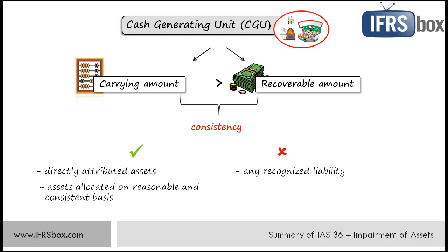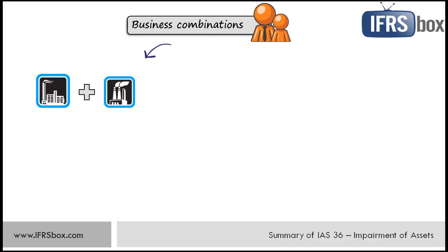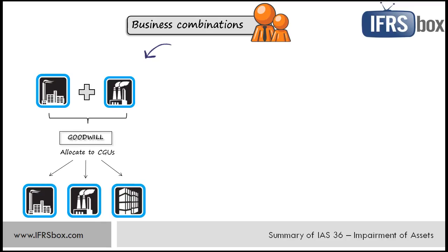Let me also explain impairment in relation to goodwill in business combinations. When one entity acquires another, goodwill often arises. For the purpose of impairment testing, goodwill shall be allocated to each of the acquirer's cash generating units or groups of them, based on benefits expected from the synergies of the combination, at the lowest level within the entity at which the goodwill is monitored for internal management purposes, but not larger than an operating segment.